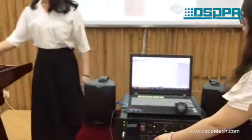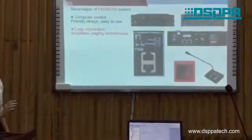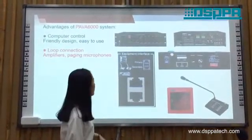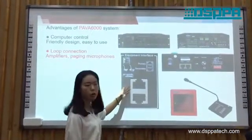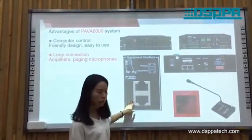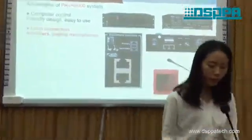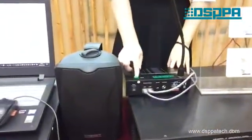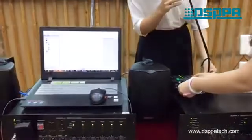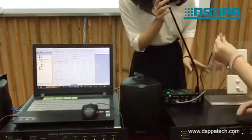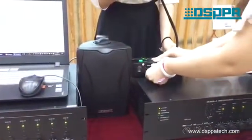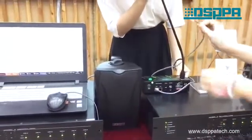Now I would like to introduce the loop function of this system. As you can see, this interface supports the DFS function, which means that when we connect our system with this cable and something happens to one cable, the other cable can still connect and the system can still work. For example, for the paging line — when we use the paging line for announcements and one cable goes offline, it can still work. And it is the same for the other cable.